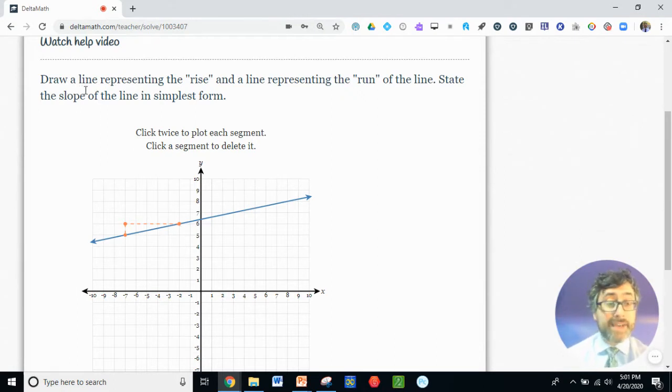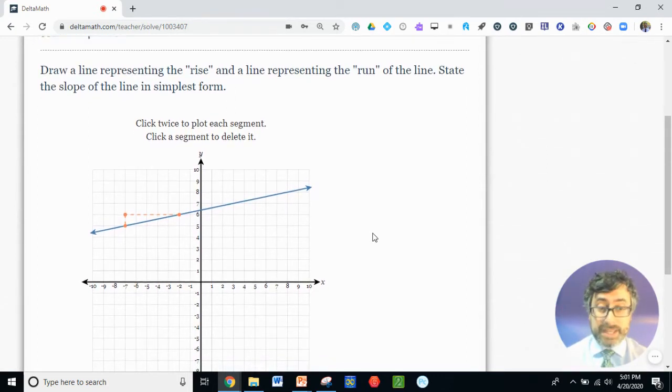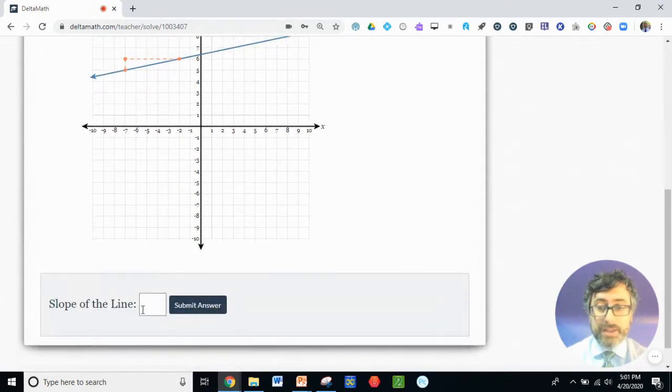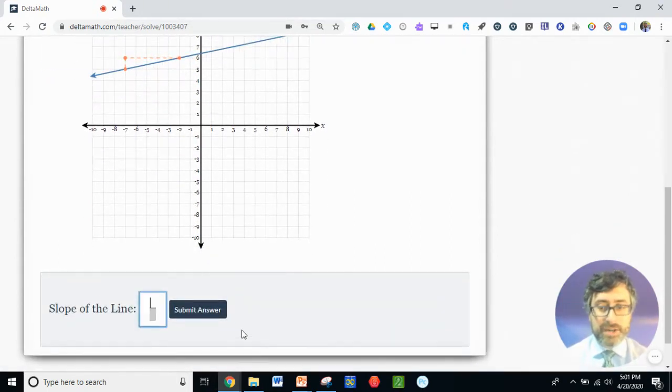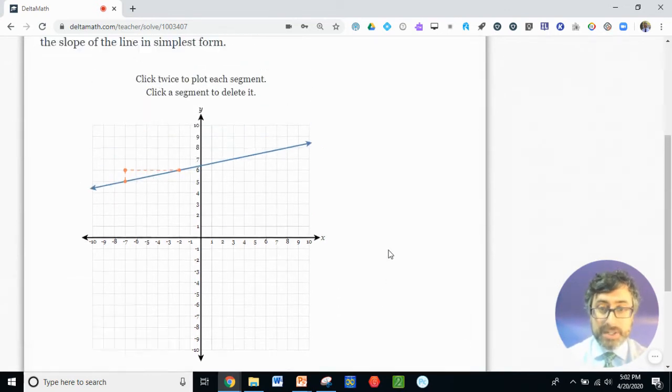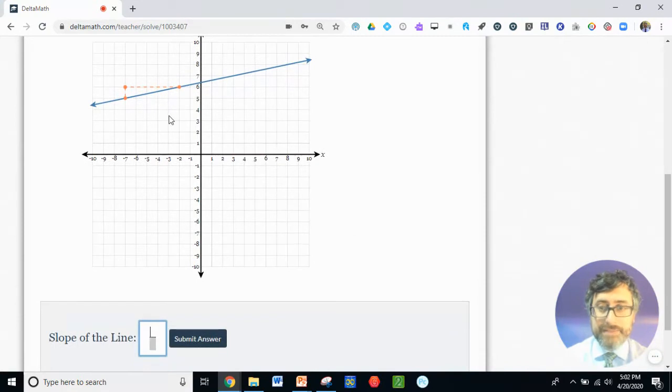Fantastic. I've done that first step of drawing a line representing the rise and a line representing the run. Now how can I use this to figure out the slope of the line in simplest form? Well, a slope should be some sort of ratio. I'm going to write that as a fraction. I did that by hitting the slash button underneath the question mark on my keyboard. So to do this, first I'm going to need to consider the rise. We're always going to consider rise first when we think about slope. How much did it rise? Well, it went up by one.